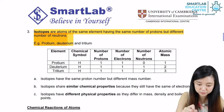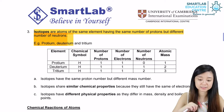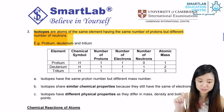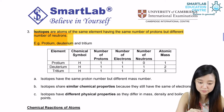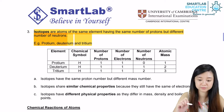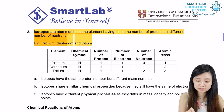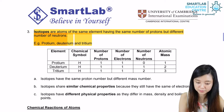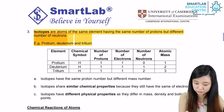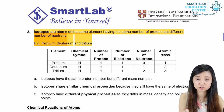Take for example the element hydrogen. It actually exists as three different types of isotopes: protium, deuterium, and also tritium. You notice in the table that all of them have the symbol H because they are all atoms of the same element and they have the same number of protons like hydrogen, which has one proton.